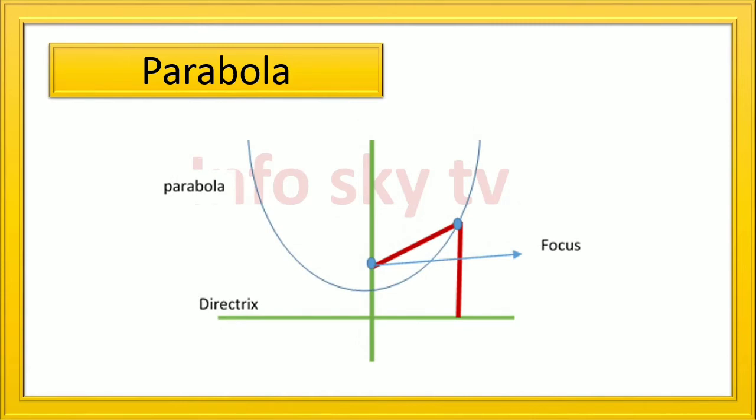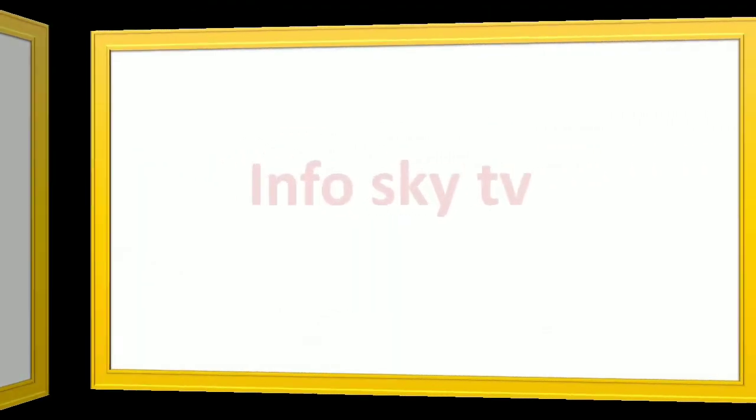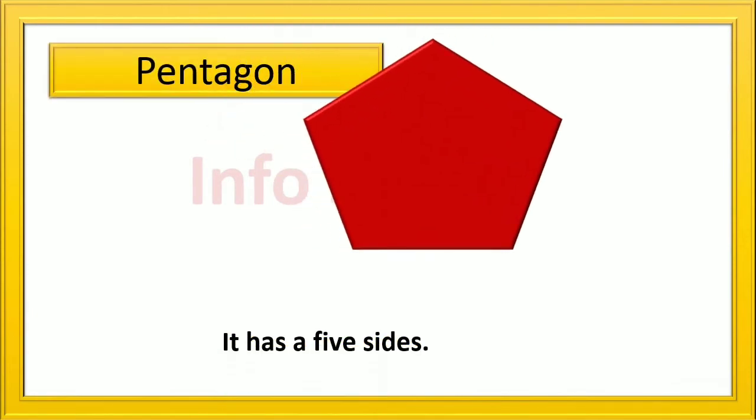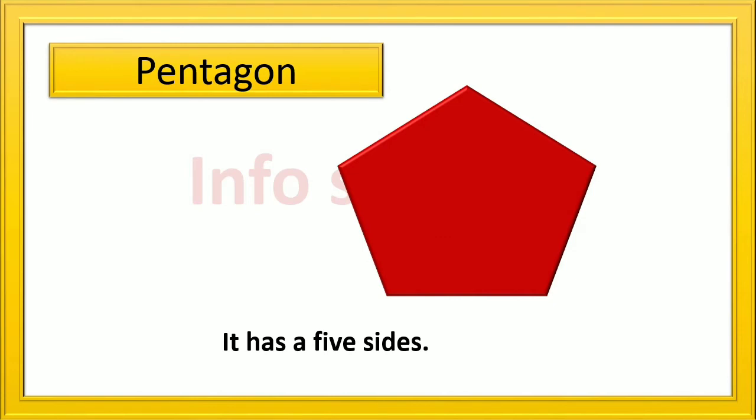Parabola: it is like an arc. Pentagon: it has a five sided polygon.